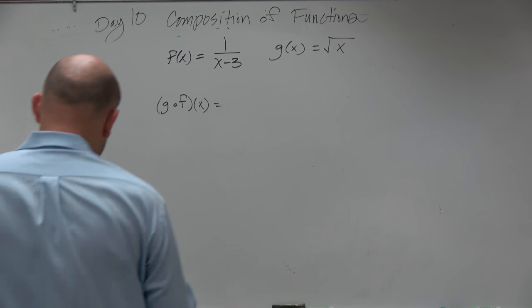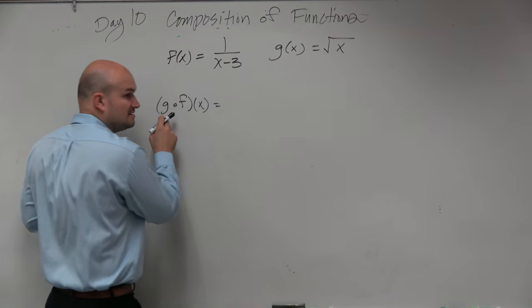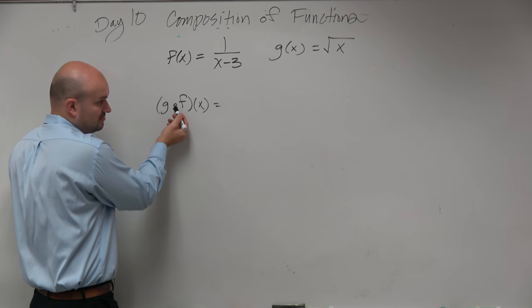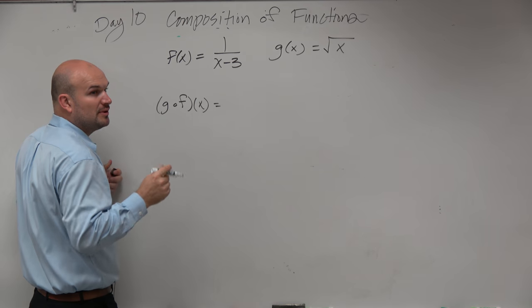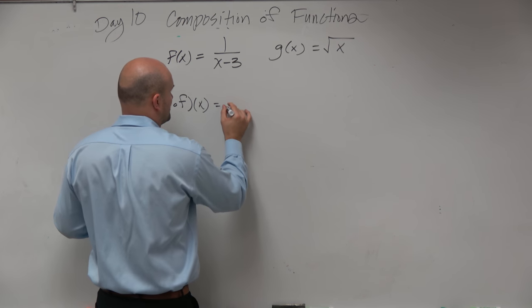There's a couple different ways you're going to see notation. This, g of f of x, is representing our composition symbol. Another way that you'll see this written is going to look like this.